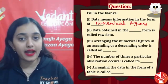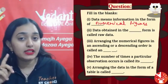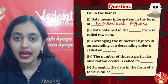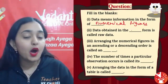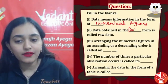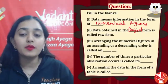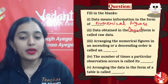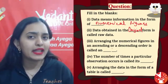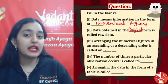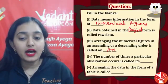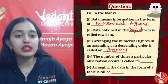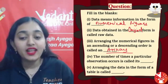Data obtained in the original form is called raw data. Raw data is unused, unseen, unmodified data — data obtained in the original form with no modification is raw data. Next: arranging numerical figures in ascending or descending order is called an array. Array is nothing but data arranged in order.